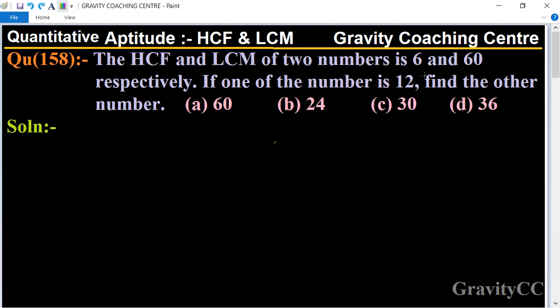In this question, the HCF is given as 6 and LCM is 60, and one of the numbers is 12. So find the other one. First, let the other number be 6x because 6 is the HCF.